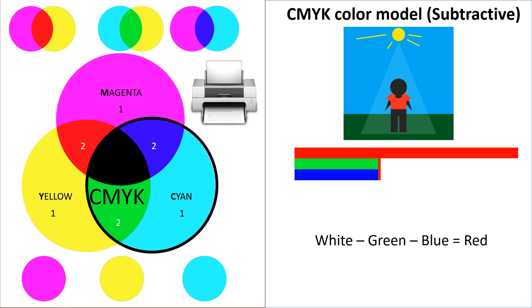Say you're wearing a red shirt when white light — which we now know is made up of red, green, and blue light — hits your shirt. What happens is your shirt absorbs all the color that hit it, except for red. The shirt reflects the color red, and so that's what we see.